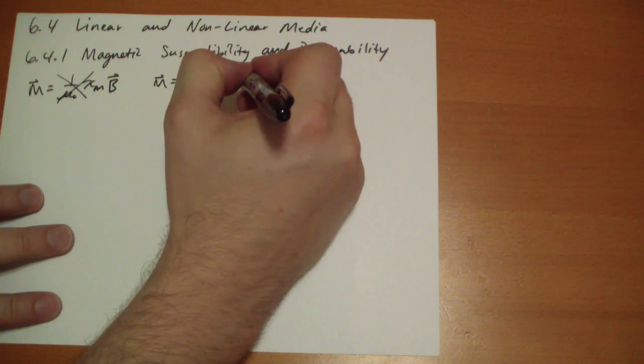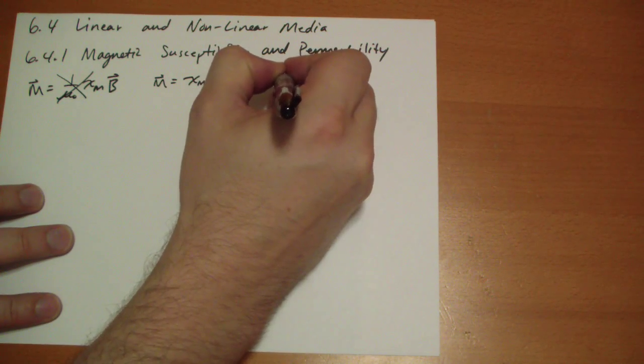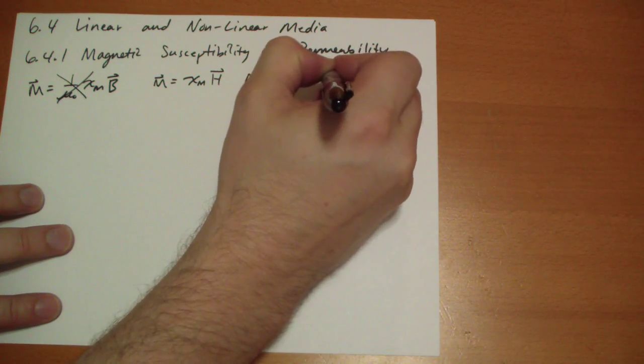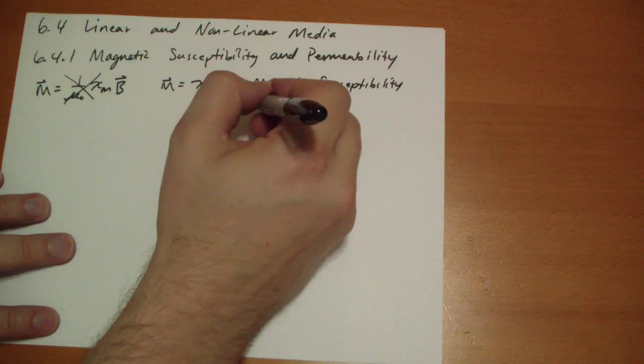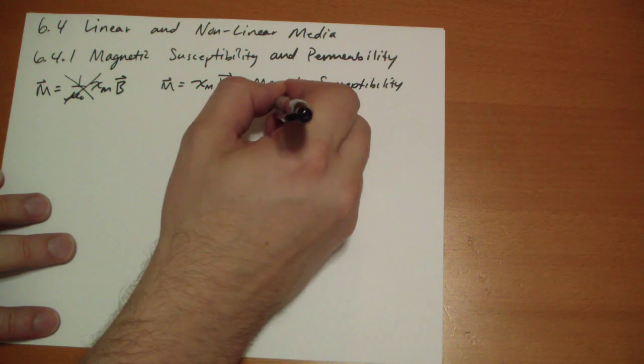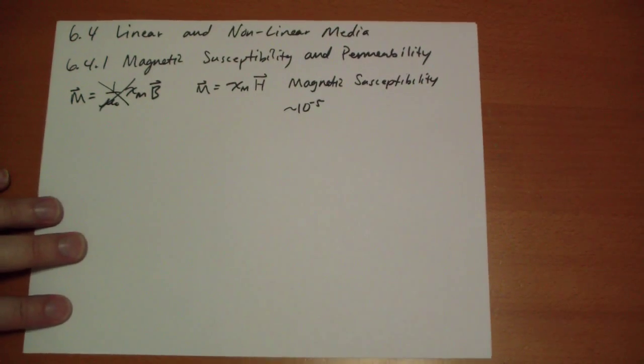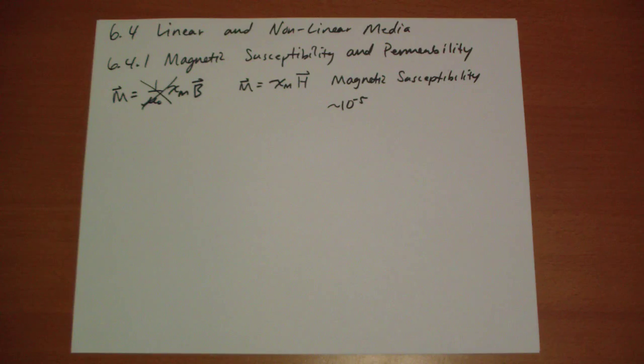Magnetic susceptibility. Let me see if I can write this out without spelling anything wrong. Typically values are in the range of 10 to the negative 5th. It is a number, it doesn't have a unit, it's just a number.